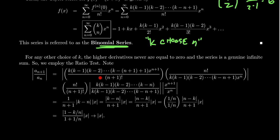Taking a_(n+1) and dividing by a_n, putting the factorials together gives n! over (n+1)!, which simplifies to 1/(n+1). The numerator terms k(k-1)(k-2)···(k-n) divided by k(k-1)(k-2)···(k-n+1) — most terms cancel, leaving just (k-n) over (k-n+1), times x. There appear to be some typos in the notes, but the x terms also cancel down to leave just x.